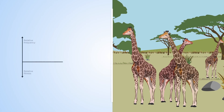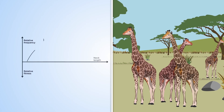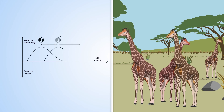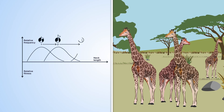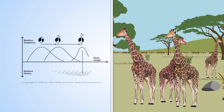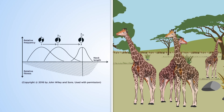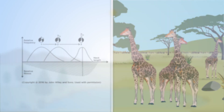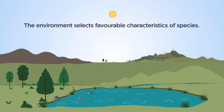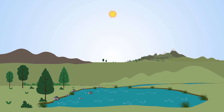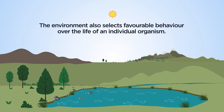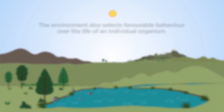This ecological advantage led to a reproductive advantage, and the average length of the giraffe neck increased from generation to generation, resulting in the giraffes we know today. Just as the environment selects favourable characteristics of species, it also selects favourable behaviour over the life of an individual organism.